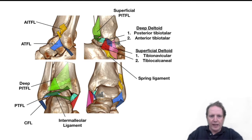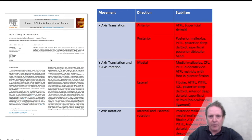For this case, we know that the medial structures are injured because we have medial clear space opening, and the syndesmosis is also ruptured. From the paper I published earlier this year on ankle fracture stability, if we look at the different movements the ankle has — x-axis translation, y-axis translation, x-axis rotation, z-axis rotation — the posterior malleolus fracture is involved with translation and z-axis rotation.